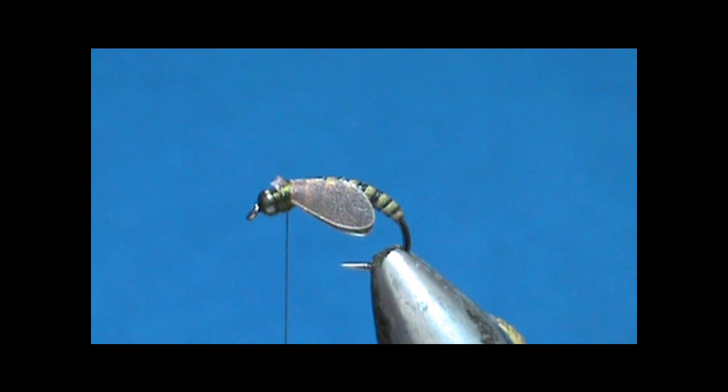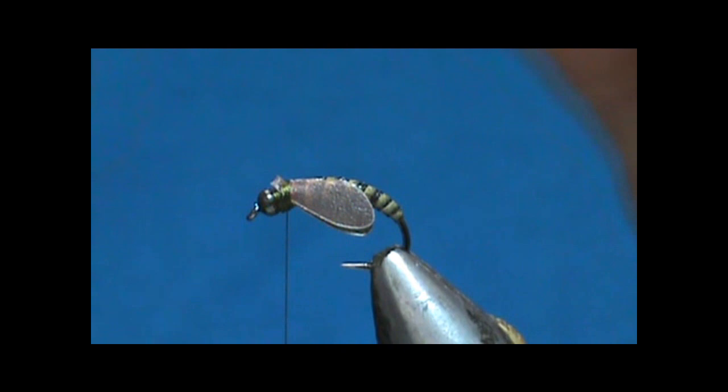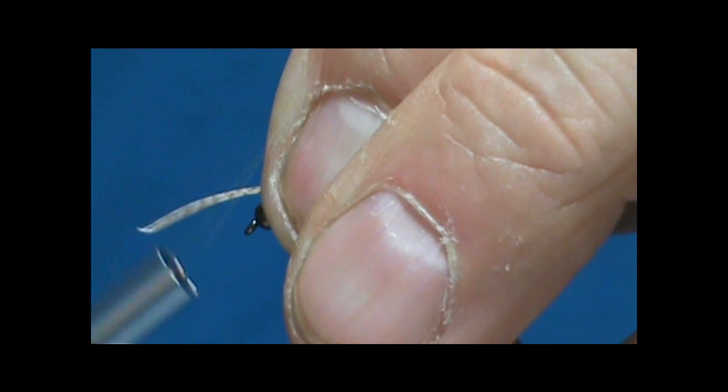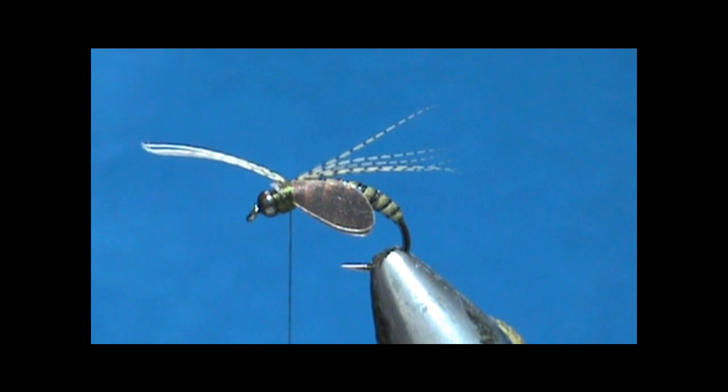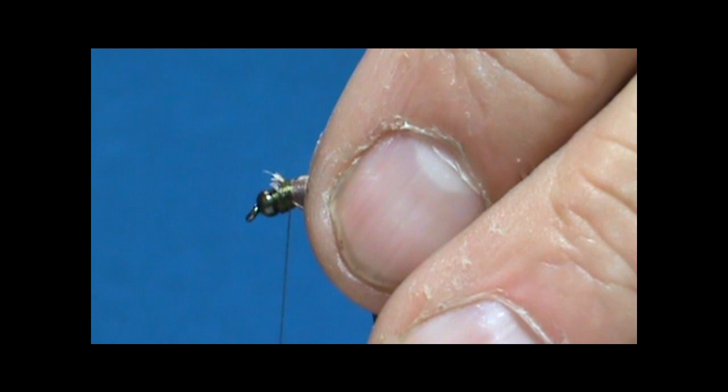Now I'm going to take wood duck flank feather and I'm going to take about maybe six of these and this is going to be our antenna. I'm going to lay them right over the back. Go ahead and trim that off.